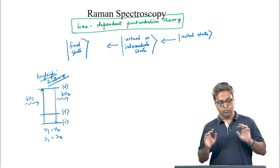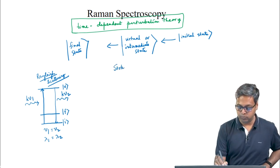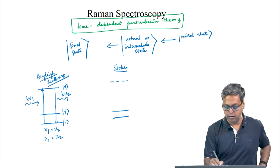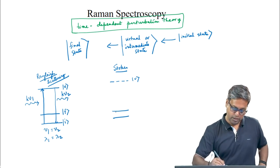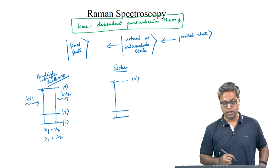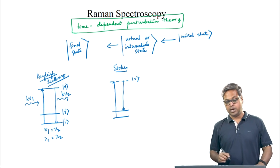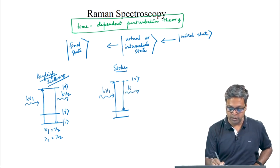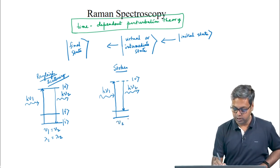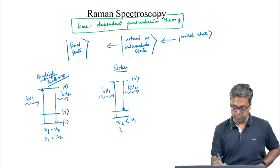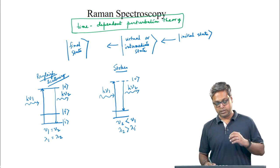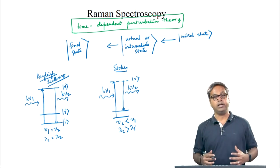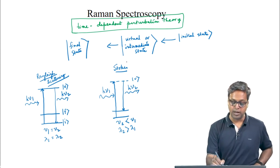If we want to draw for the Stokes lines: we have two stationary states and a non-stationary virtual state. The molecule goes from the lower state to the virtual state but comes back to the upper state. In this particular case, the incident energy is hν₁ and the emitted energy is hν₂, so ν₂ is less than ν₁, or λ₂ is greater than λ₁. The wavelength of the scattered light is longer compared to the wavelength of the incident light, and that is how we get the Stokes lines.